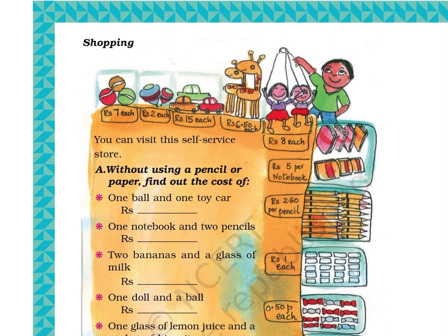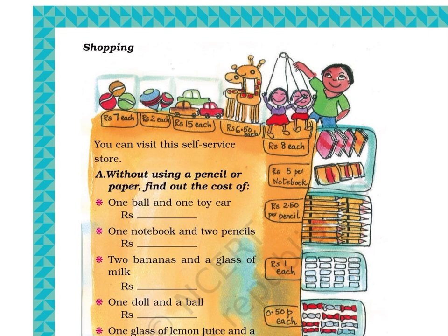Question A: Without using a pencil or paper, find out the cost of: Part A – One ball and one toy car. Rs. ___. Part B – One notebook and two pencils. Rs. ___. Part C – Two bananas and a glass of milk. Rs. ___. Part D – One doll and one ball. Rs. ___. Part E – One glass of lemon juice and a packet of biscuits. Rs. ___.